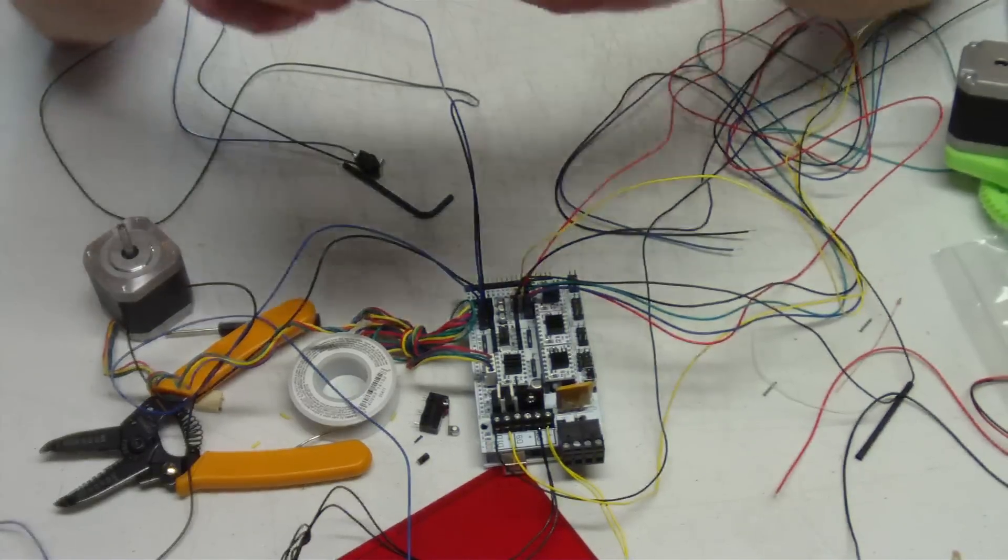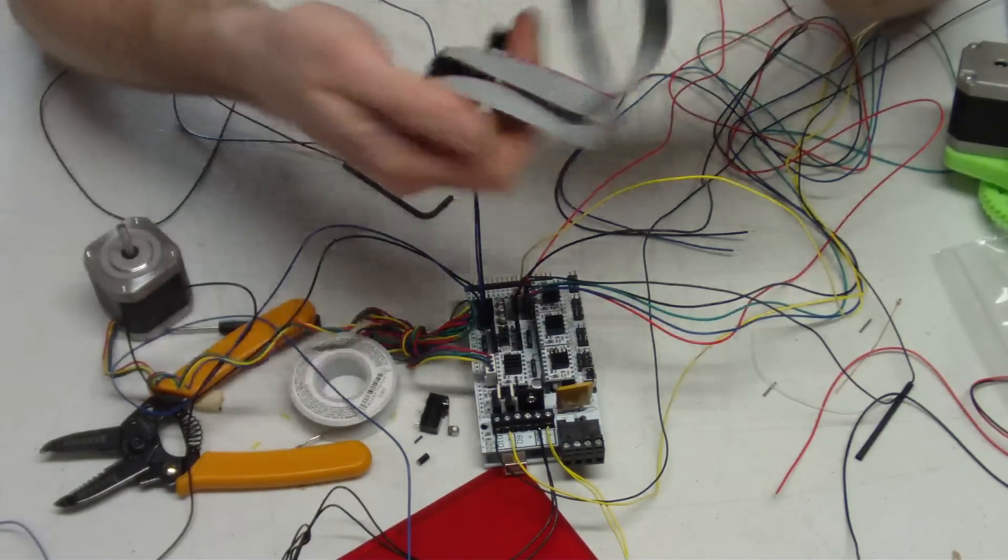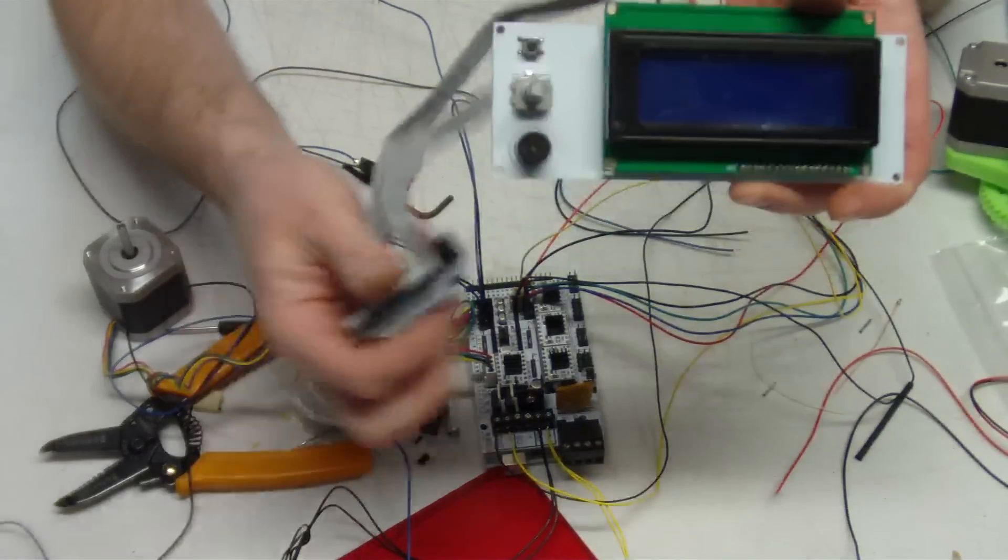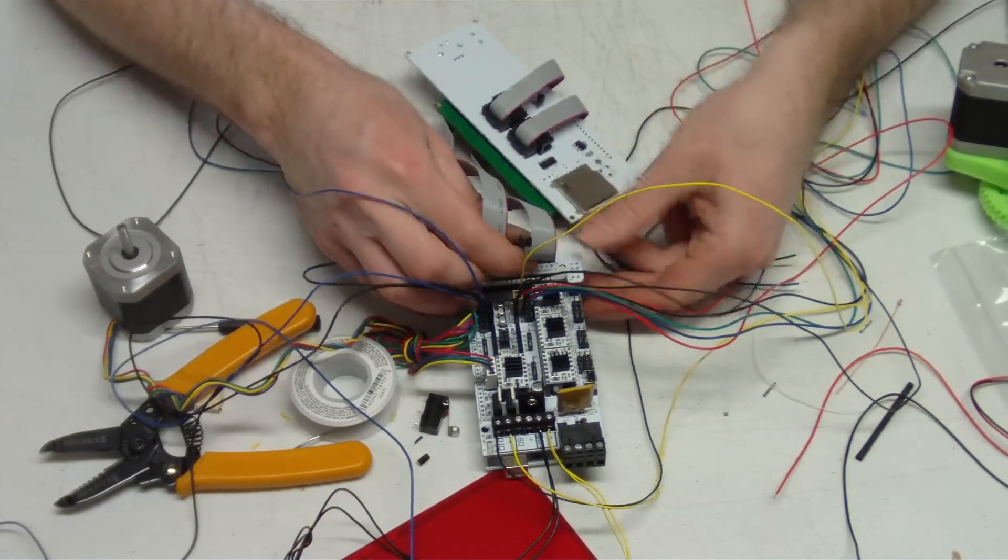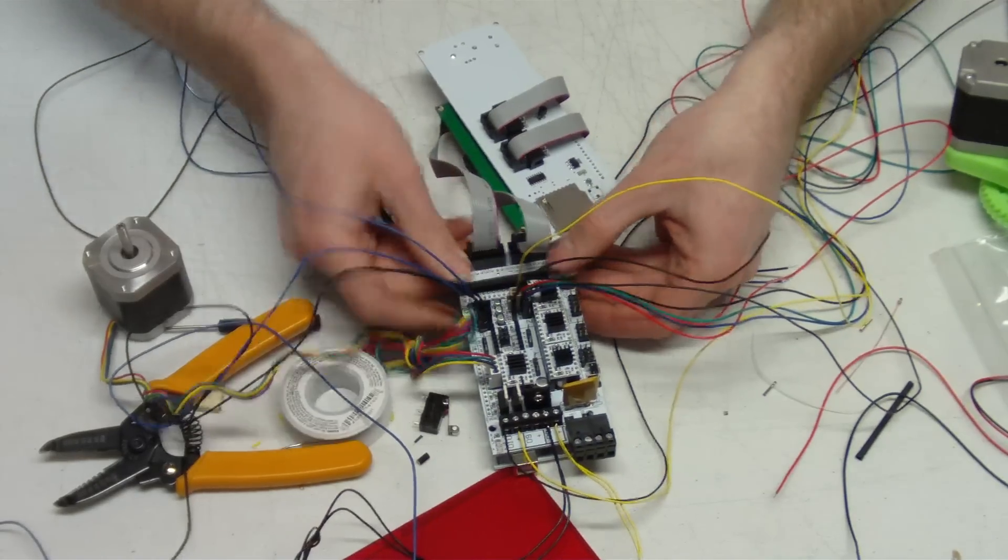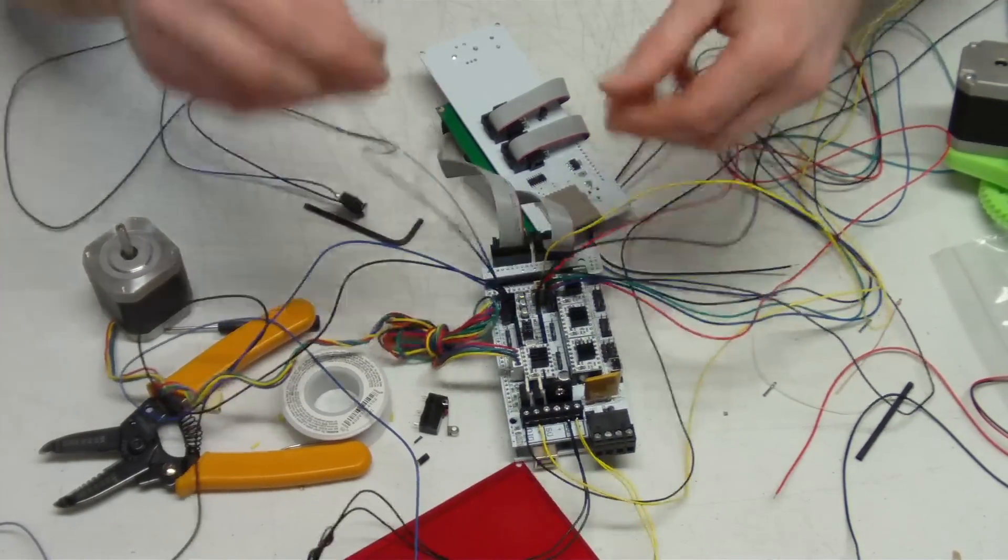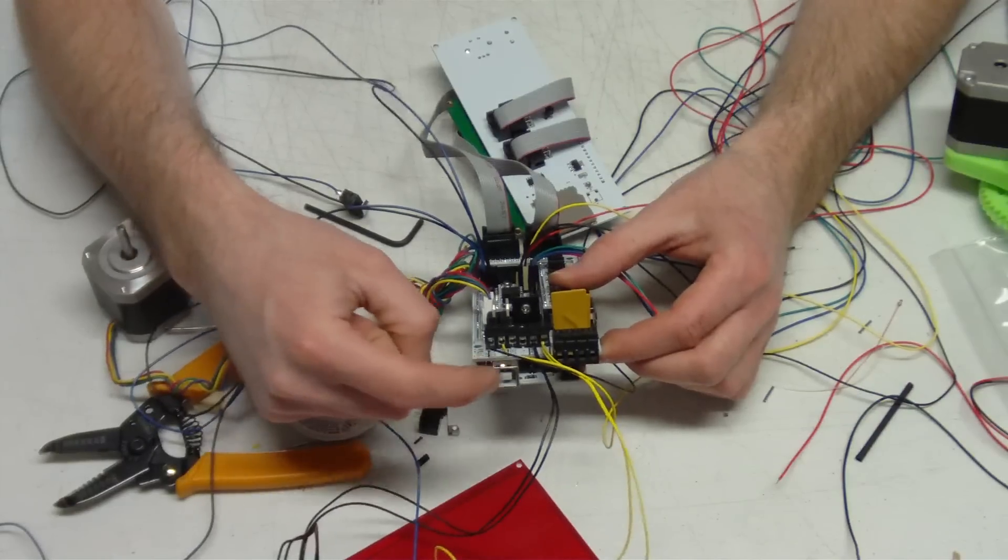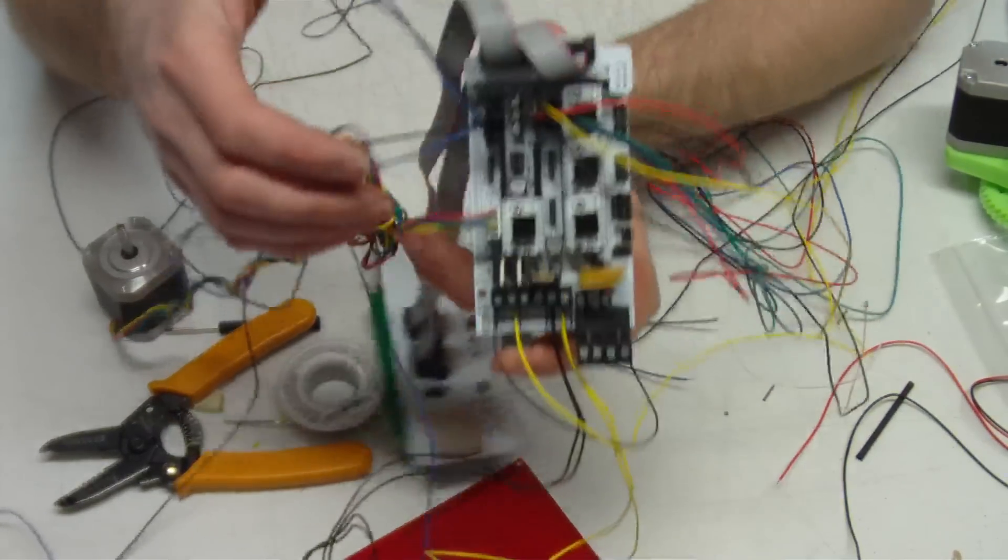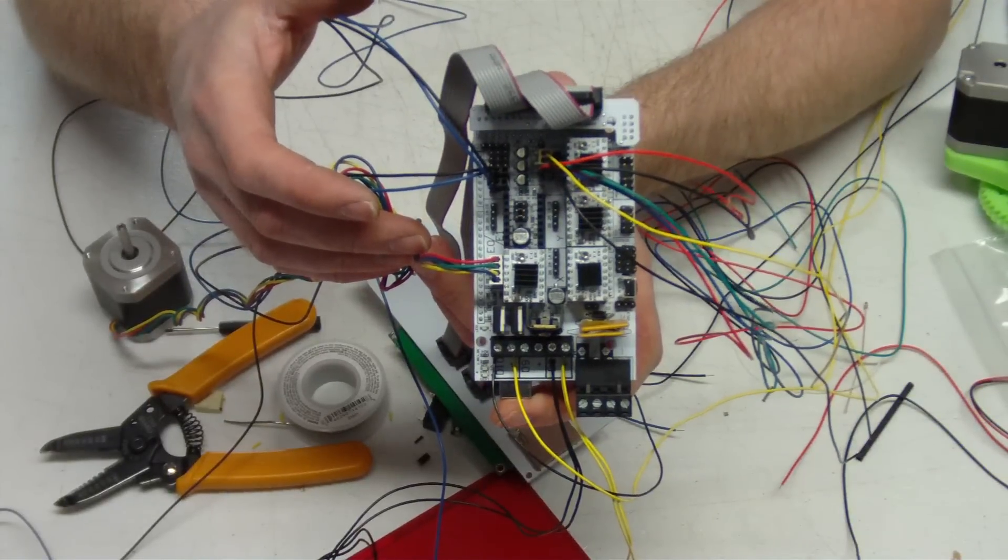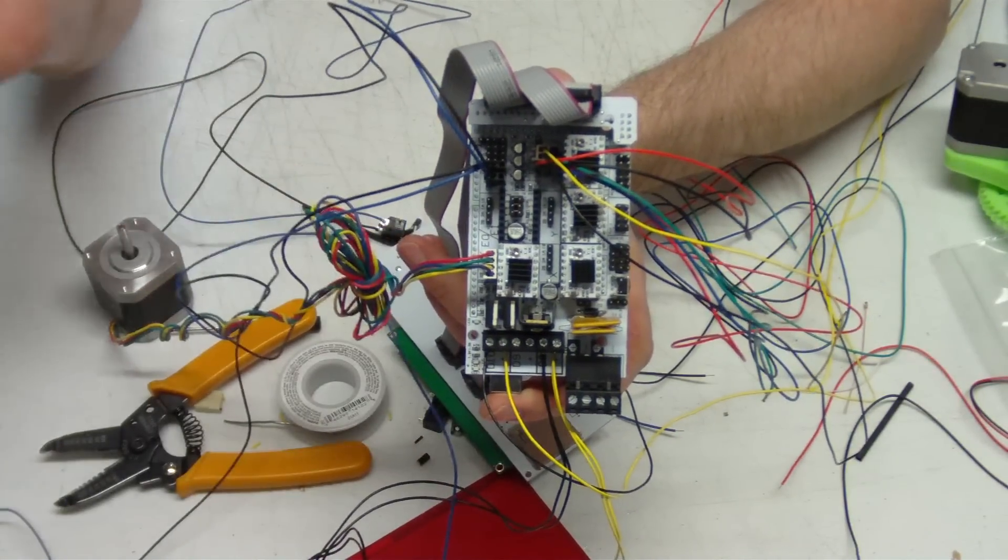Then the very last thing that we have is our LCD. It comes pre-wired with your connector, and that connector just goes right on the end here. Just slide it on just like that. Other than that, you have your USB connector, and that is everything on how you connect everything up to your RAMPS, depending on what printer it is.